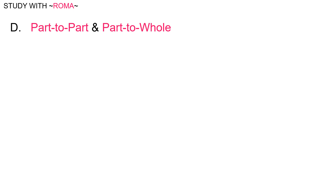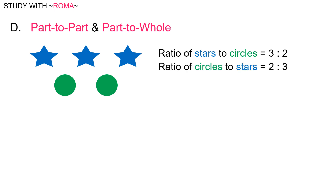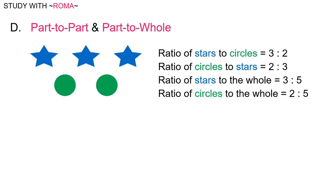Part-to-part and part-to-whole. For example, the ratio of stars to circles is three is to two. The ratio of circles to stars is two is to three. The ratio of stars to the whole is three is to five. The ratio of circles to the whole is two is to five.